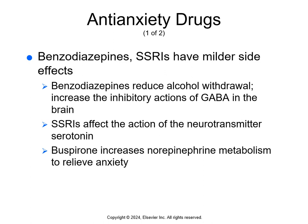Benzodiazepines used to be very popular, but now we use SSRIs more often because they have milder side effects and less risk of dependency. The major benefit of benzodiazepines is that they can act within 30 minutes and may be given as needed, whereas SSRIs may take three to five weeks to control anxiety and have to be taken regularly. Benzodiazepines decrease symptoms of alcohol withdrawal and prevent delirium tremens, and we use them in acute situations. They increase the inhibitory actions of GABA in the brain, relaxing the brain and decreasing anxiety. SSRIs relieve anxiety by affecting the action of serotonin in the brain, slowing the transmission of impulses. Anxiolytics like buspirone bind to neuroreceptors for serotonin and dopamine in the brain and increase norepinephrine metabolism to relieve anxiety.